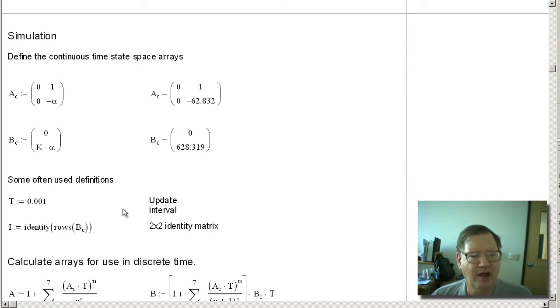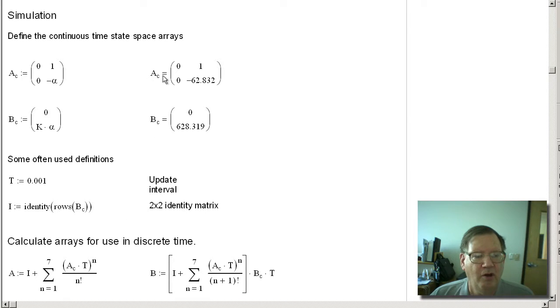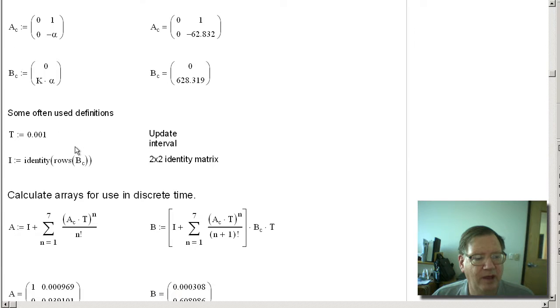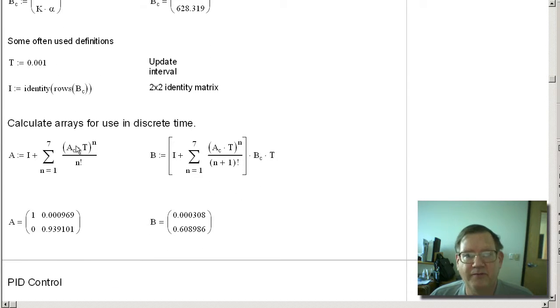Next is creating the open loop system. So we have state space. We've got the continuous formulas. And now we have to convert that to discrete form. If you're using MATLAB, you would use the eXPM function. But MathCAD does not have eXPM functions, so I had to do my own Taylor series using arrays, which is what you see here.